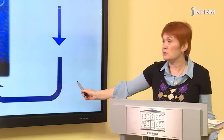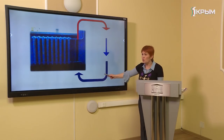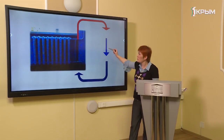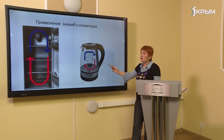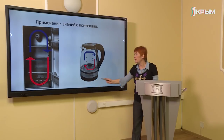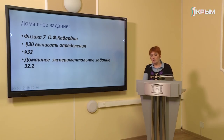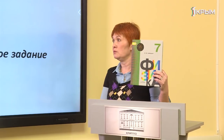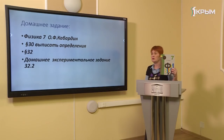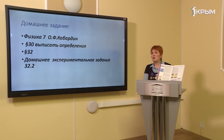Знание законов конвекции человек использует в системе отопления: батареи и радиаторы располагают внизу, так как тёплые потоки поднимаются вверх и отапливают всё помещение. Электрочайник и холодильник также демонстрируют явление конвекции. Домашнее задание: по учебнику «Физика 7» Кабардина — параграф 30, записать определения; параграф 32, ознакомиться с видами теплопередачи и выполнить домашнее экспериментальное задание по наблюдению теплопередачи. Спасибо за урок.